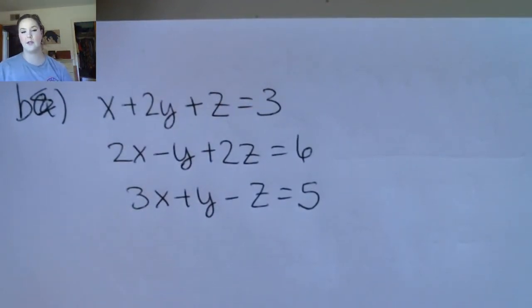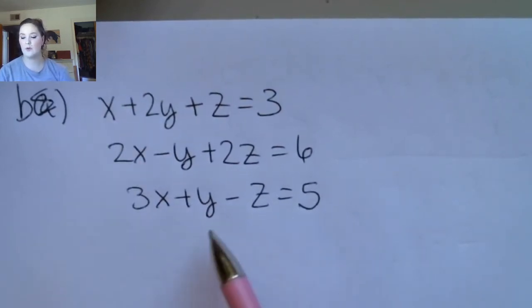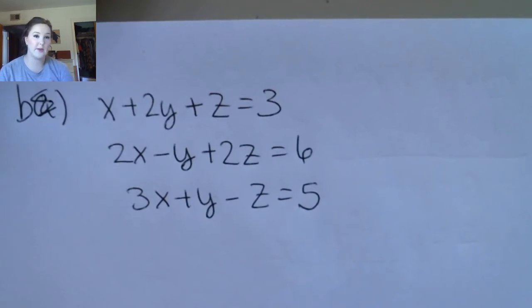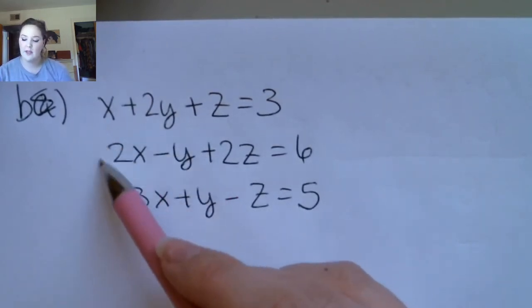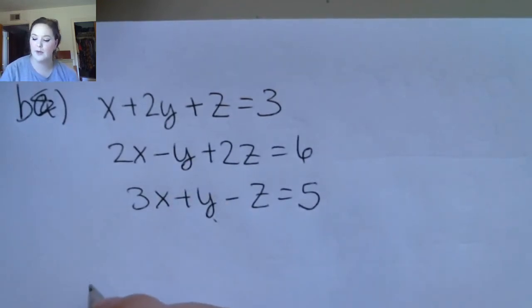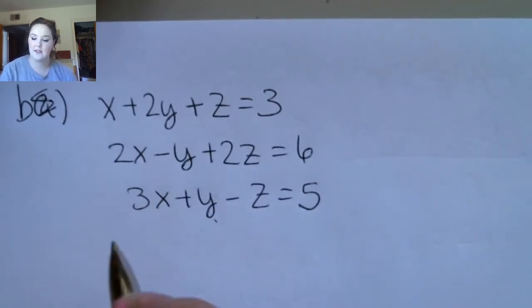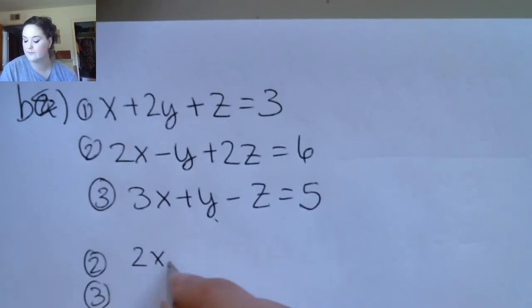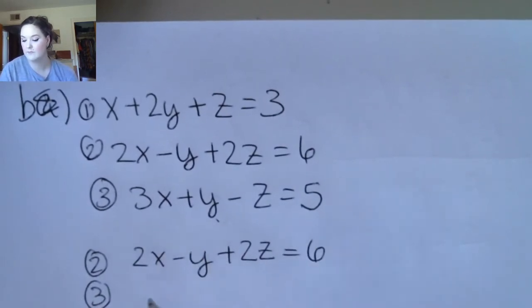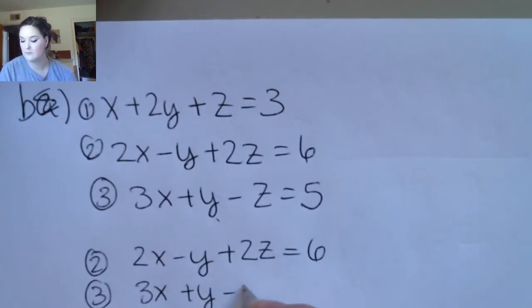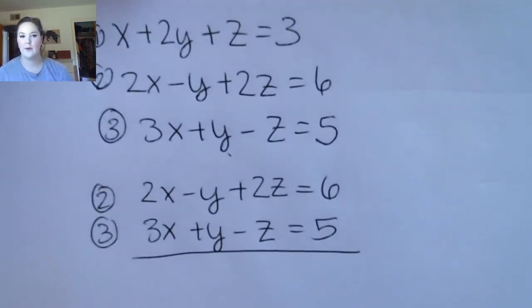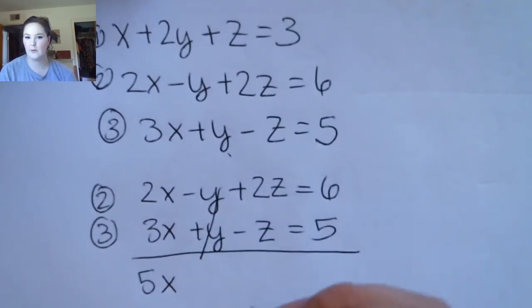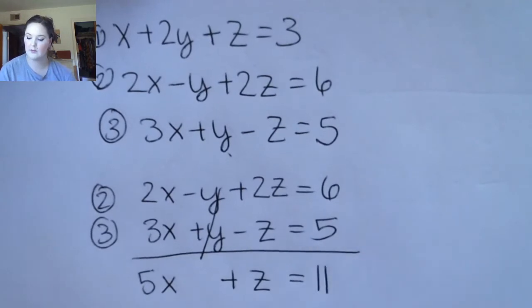The first thing we're going to do is pick which variable we're going to eliminate. When I'm looking for a variable to eliminate, I definitely want one where one of the coefficients is 1 — that makes it really easy. Here there's an x with coefficient 1, a y with coefficient 1, and a z with coefficient 1. But I can also see that equations 2 and 3 are already set up to eliminate y, so I'm going to pick to eliminate y. I'll just add the second and third equations together: I get 5x — the y terms cancel — plus z equals 11. This is my fourth equation.